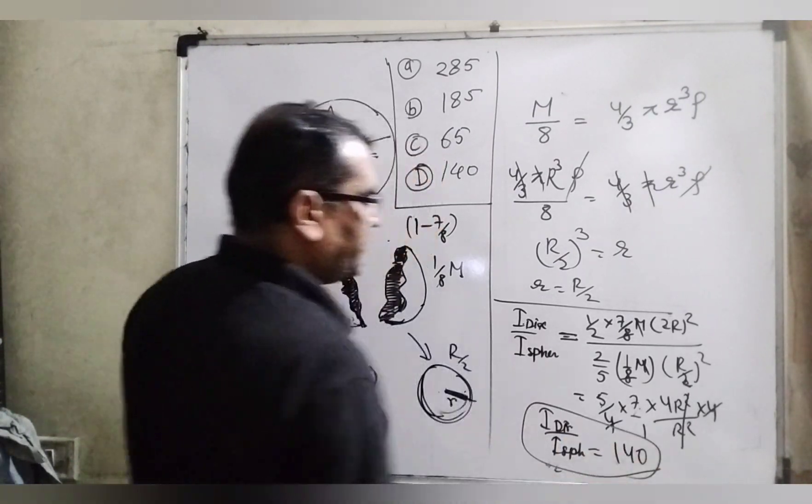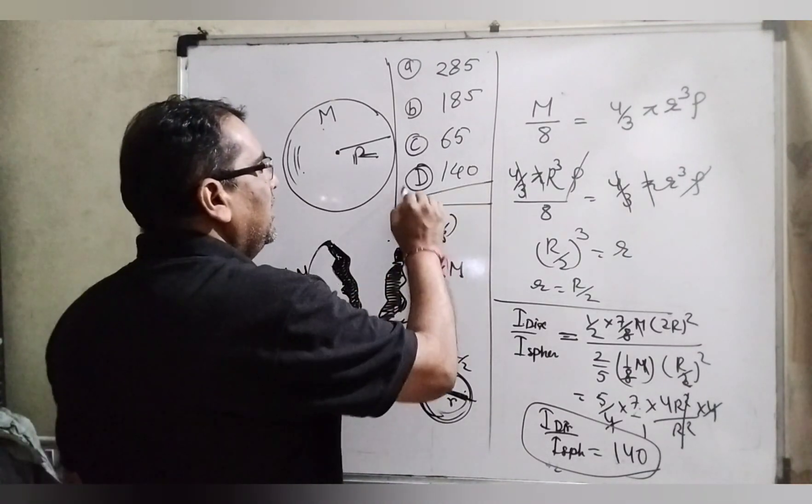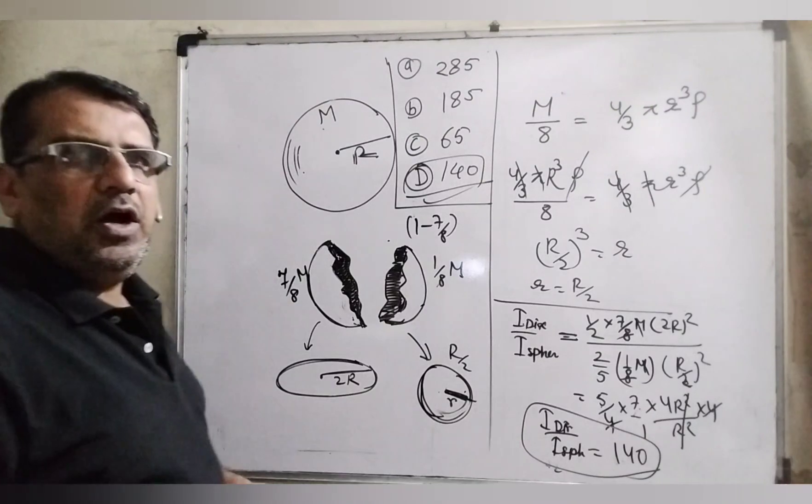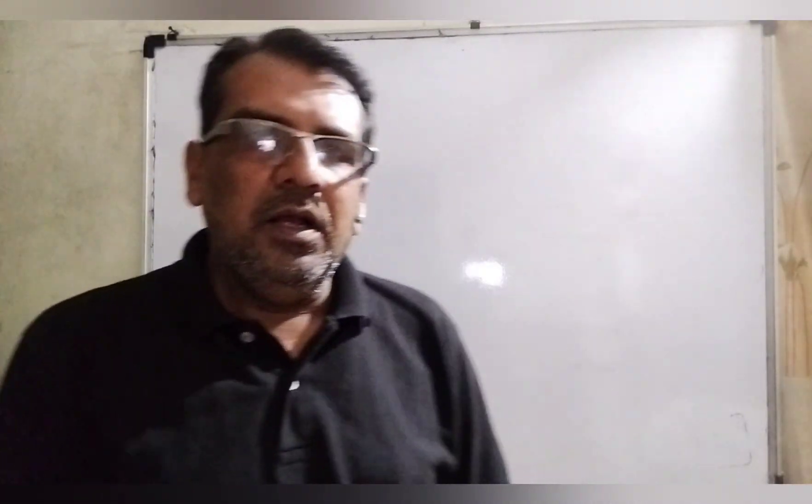I disk by I sphere. What is our option? Which option is the answer? Yes, D. D option is correct. I hope you understand this question. Again, thank you for staying till the end of this video. I hope you understand these questions. And please don't forget to subscribe my channel. Thank you. Bye bye. Take care.